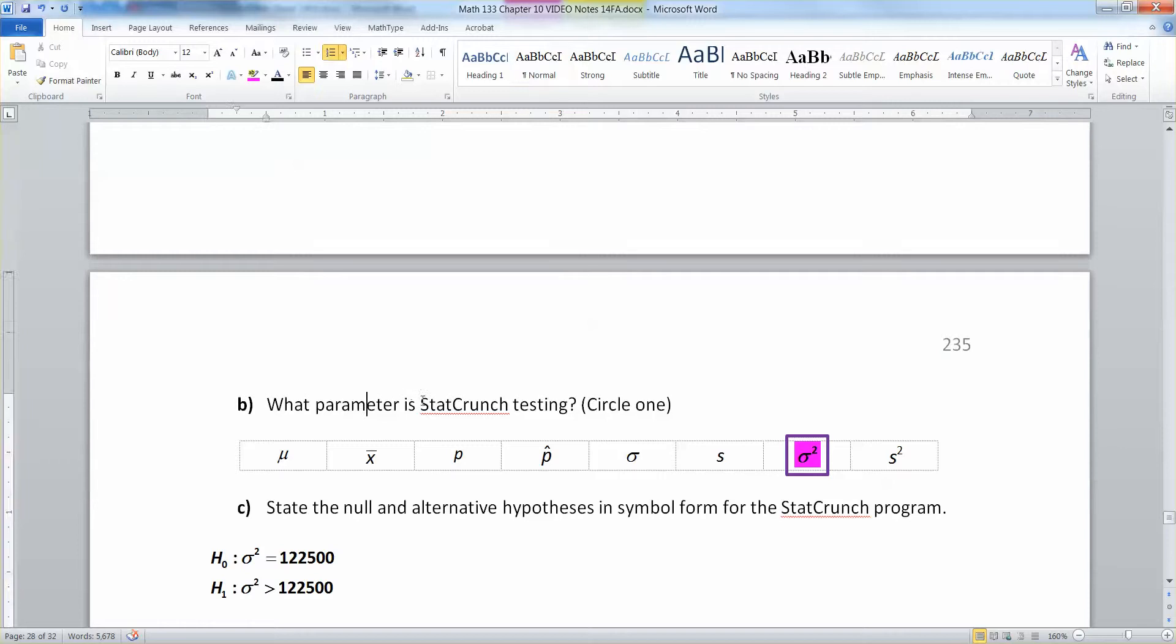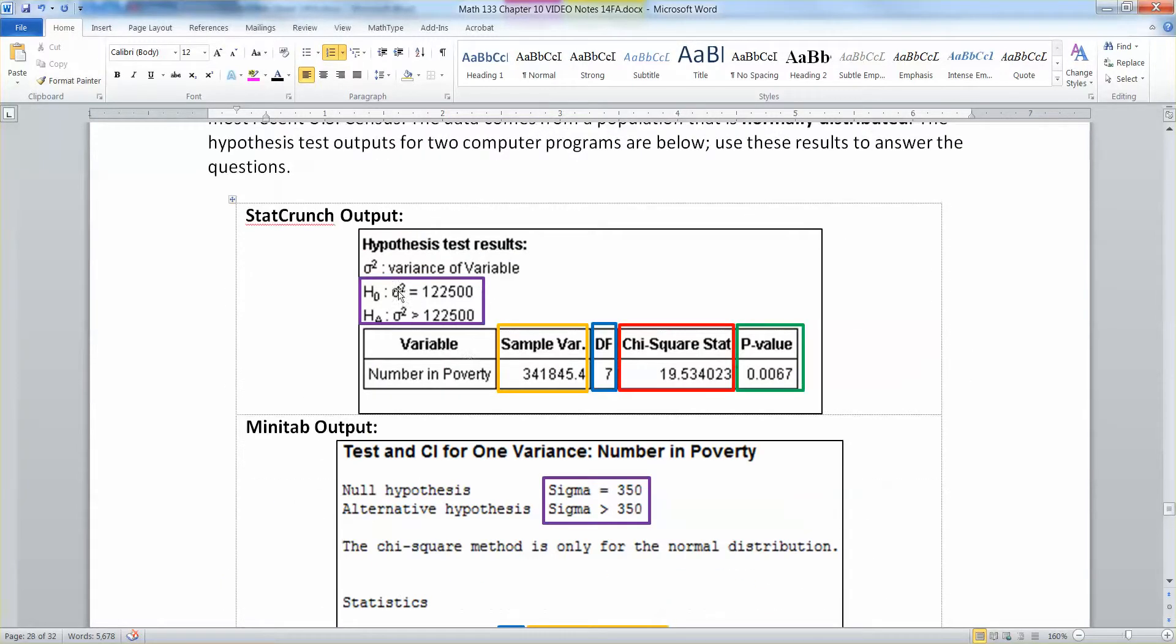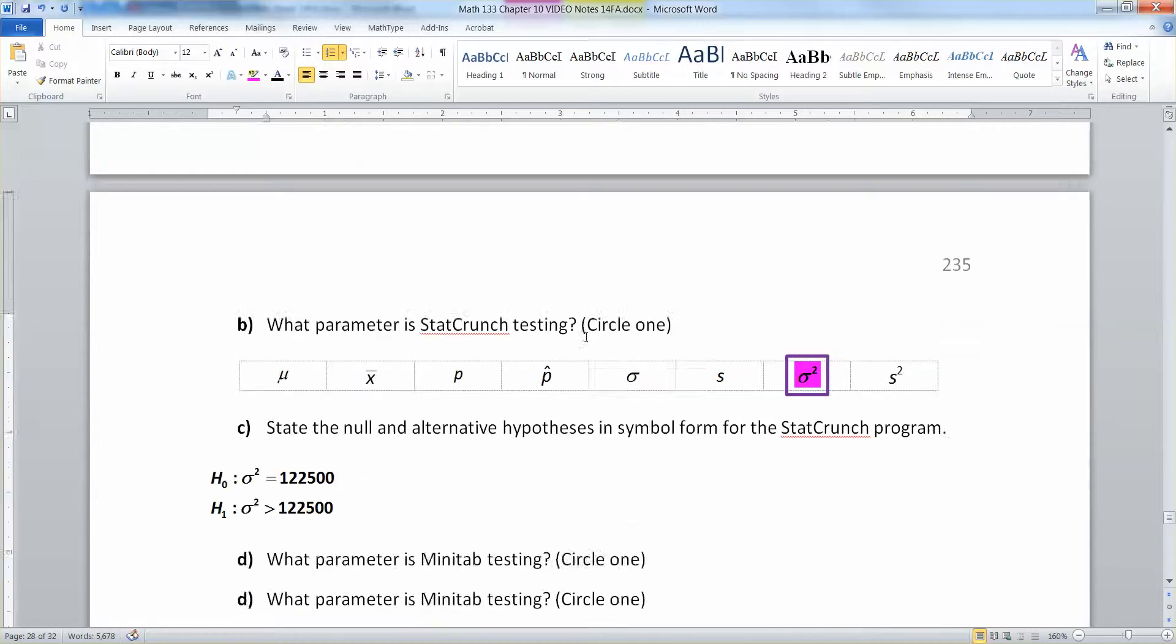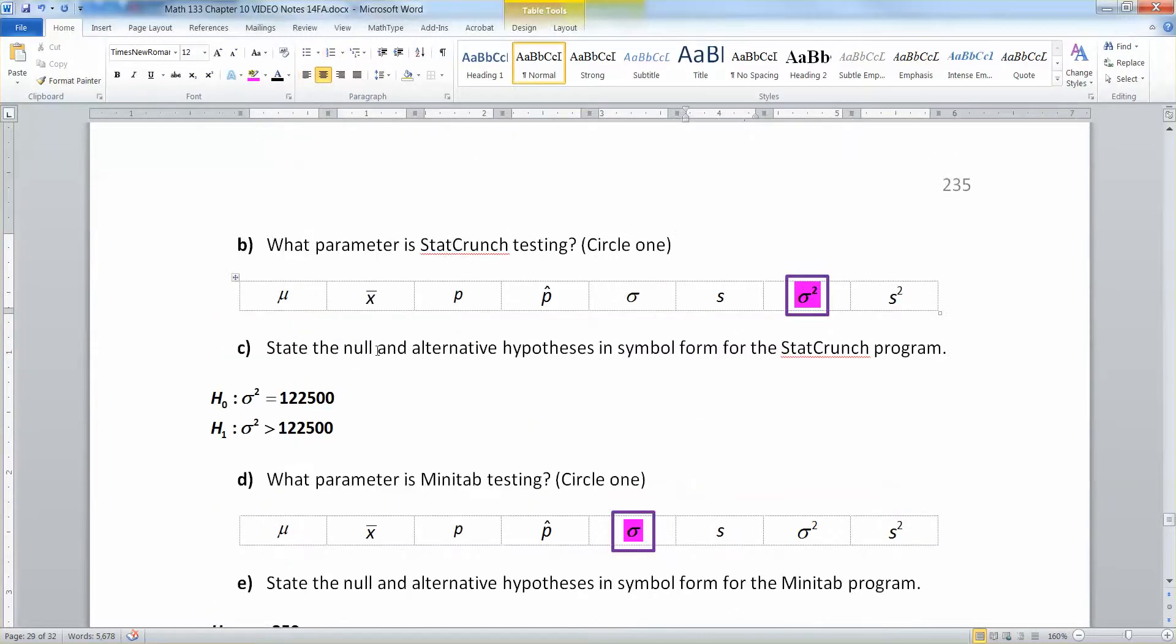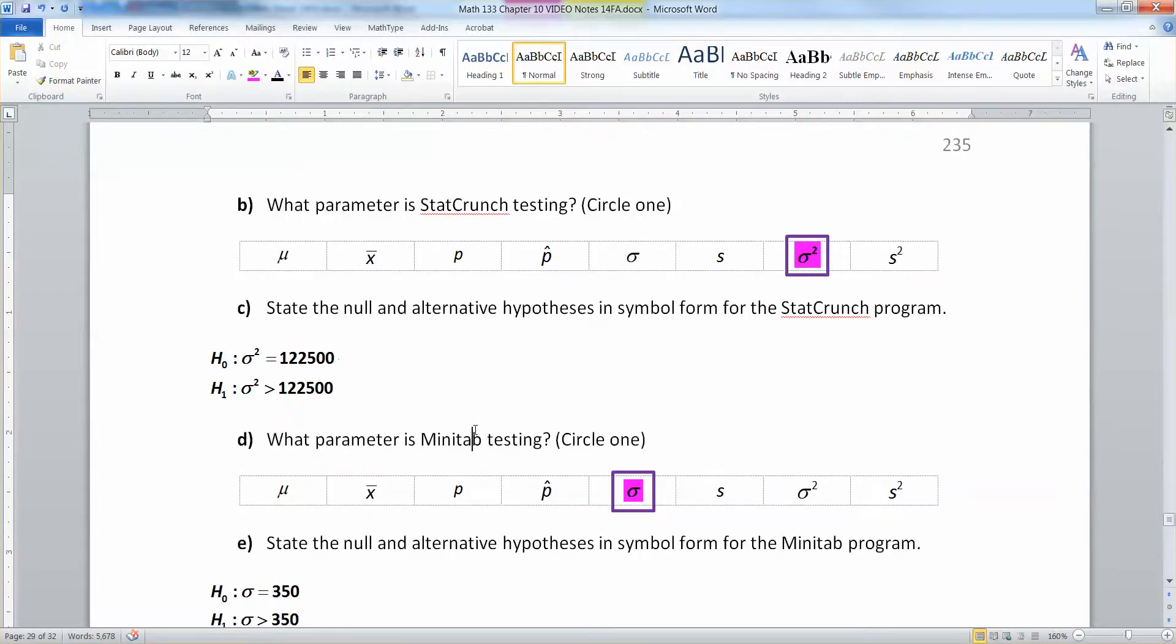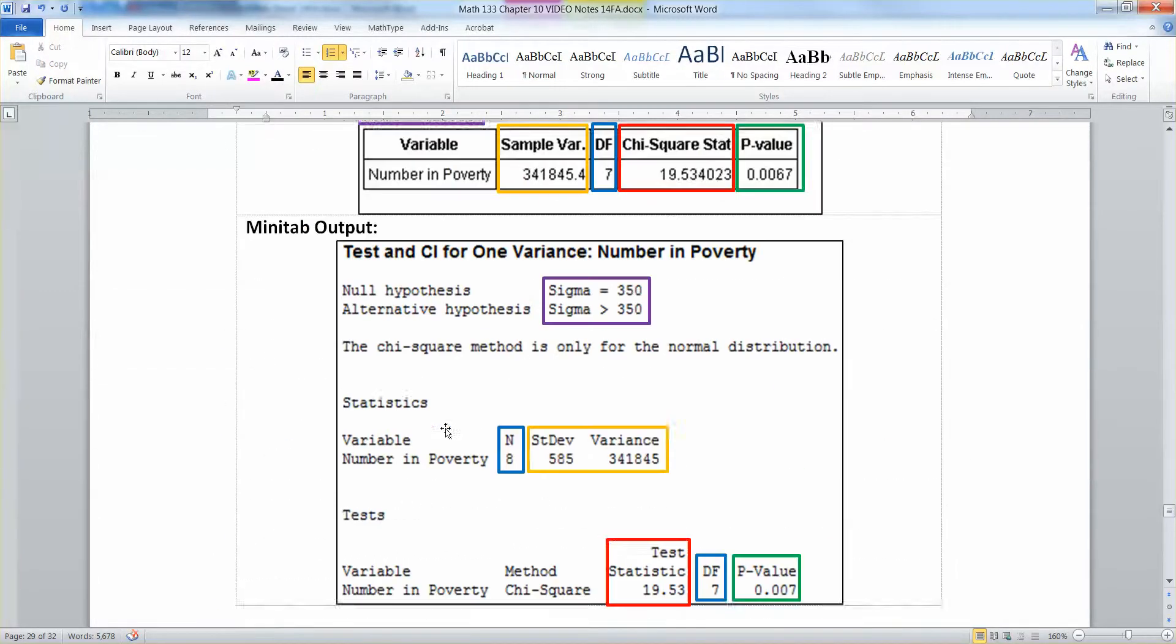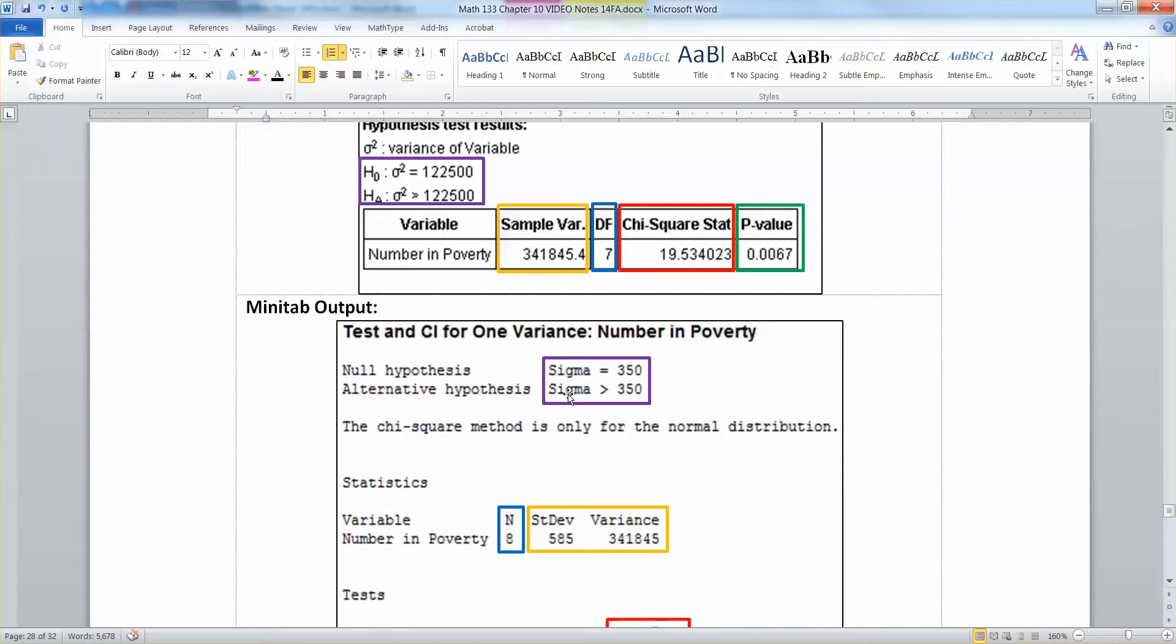Now, what parameter is StatCrunch testing? So if we look at StatCrunch, StatCrunch has sigma squared in there. So StatCrunch is testing sigma squared, and the null and alternative for StatCrunch is sigma squared equals 122,500, and sigma squared is greater than 122,500.